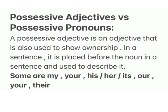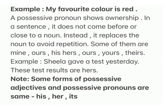Possessive adjectives vs possessive pronouns. A possessive adjective is an adjective used to show ownership in a sentence. It is placed before the noun it describes. Some possessive adjectives are: my, your, his, her, its, our, your, their. Example: 'My favorite color is red.'